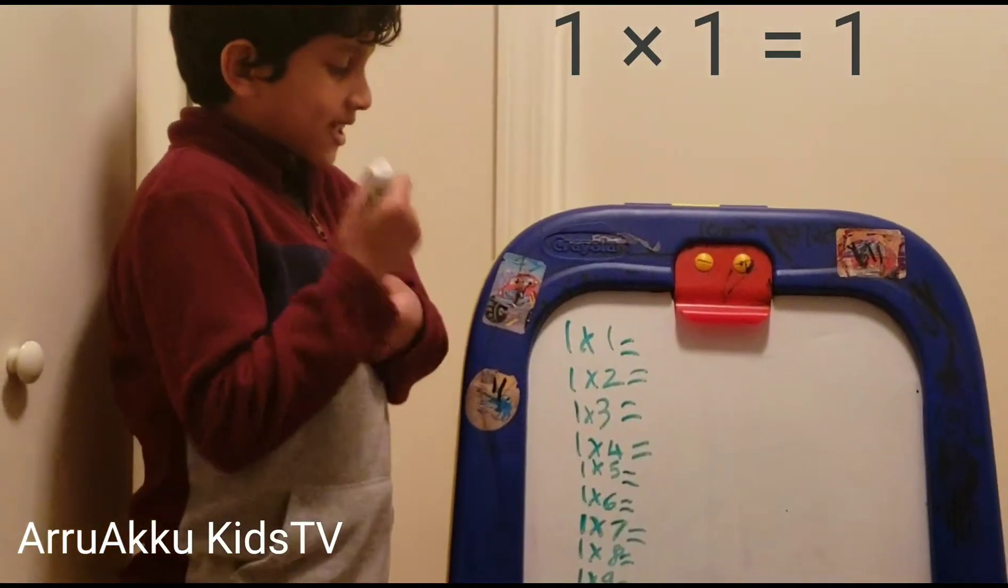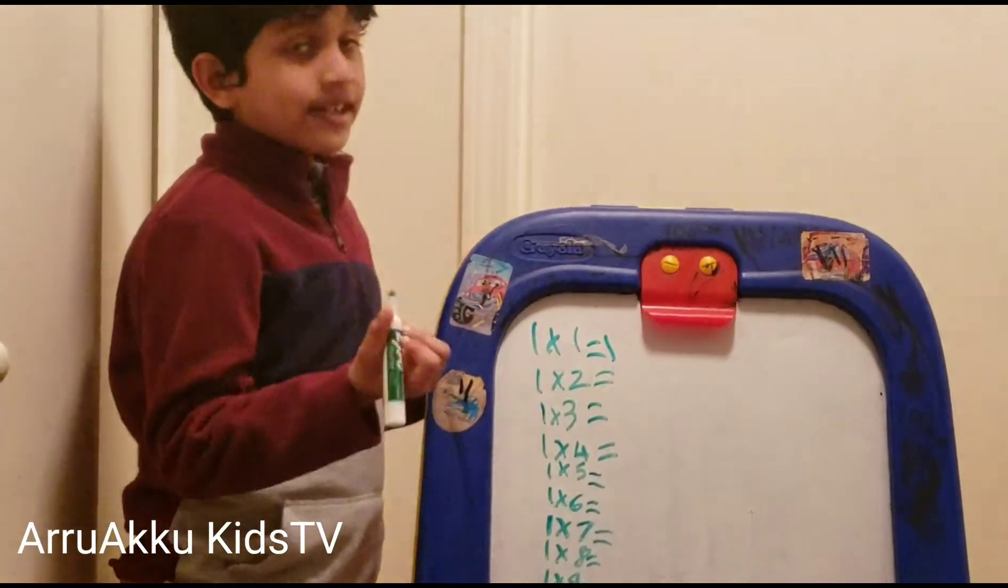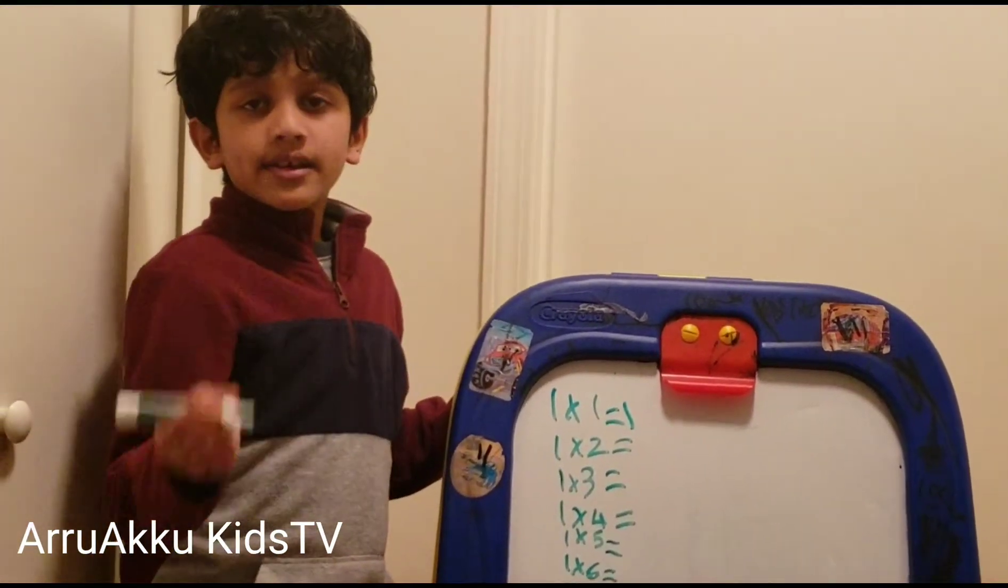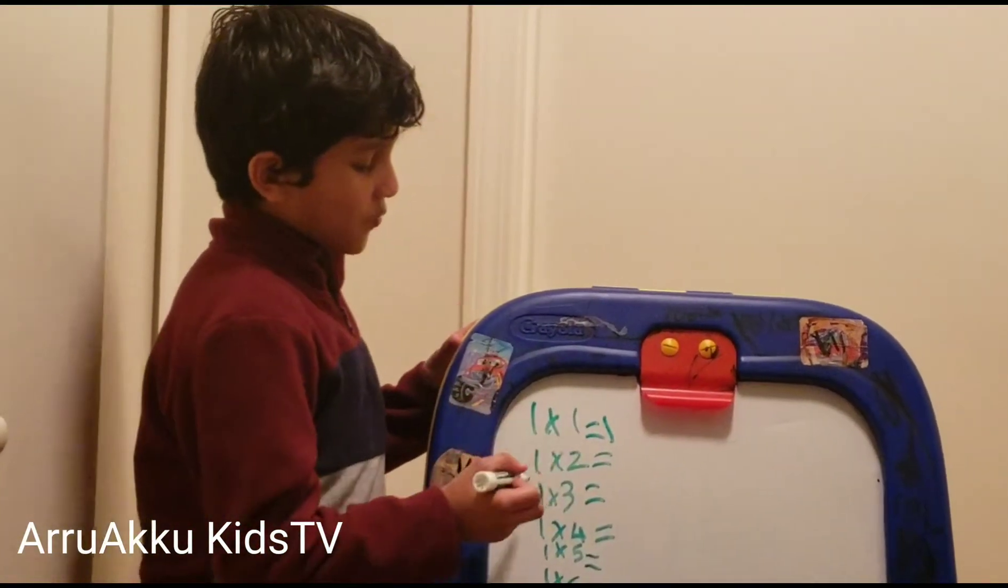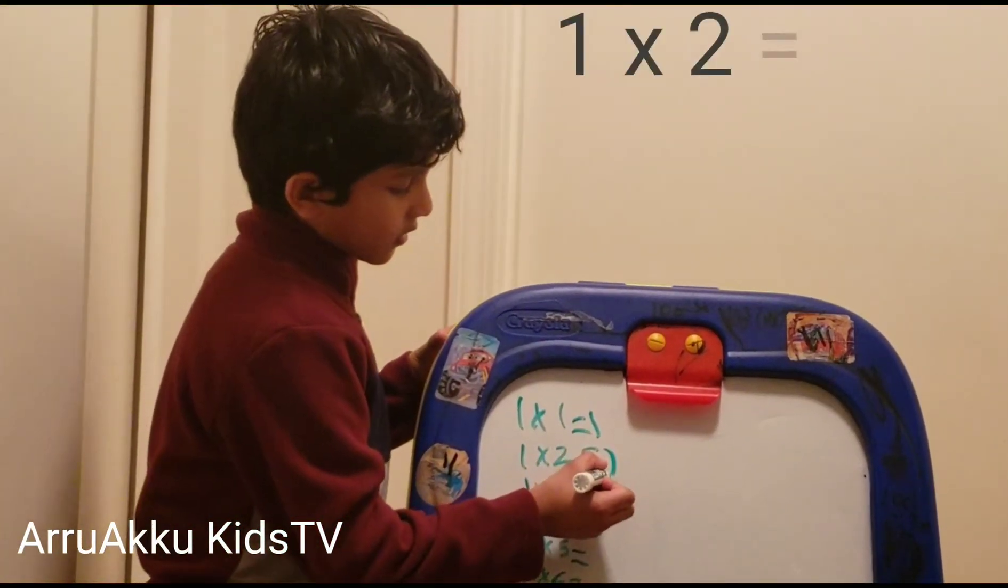1 times 1 is 1. Anything you multiply by 1 is that same number. So 1 times 2 is 2.